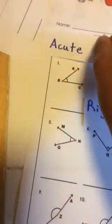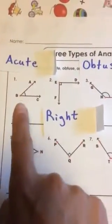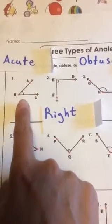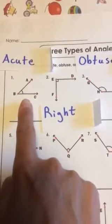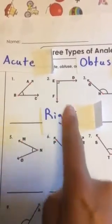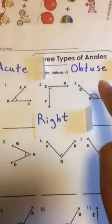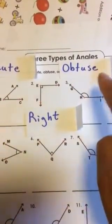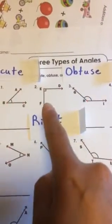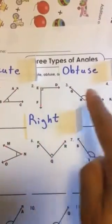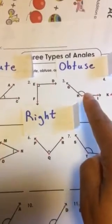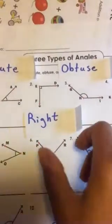So let's review them real quick. We have acute — a small one that would fit inside the right. Obtuse — the bigger one where the right angle could fit inside it.